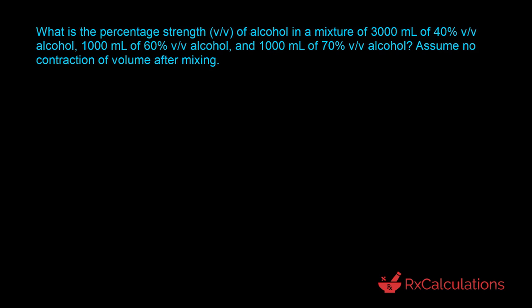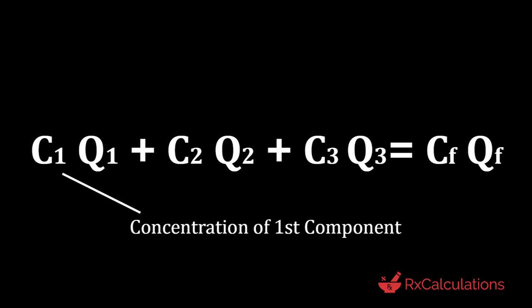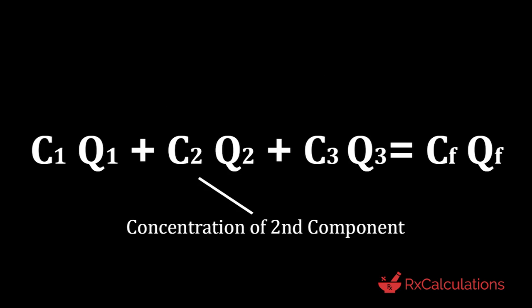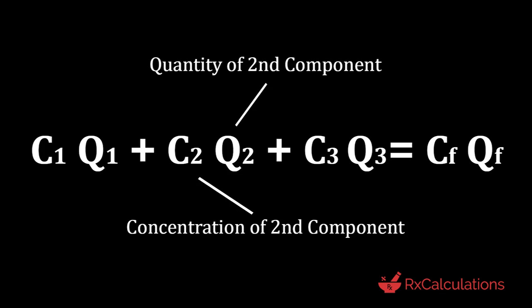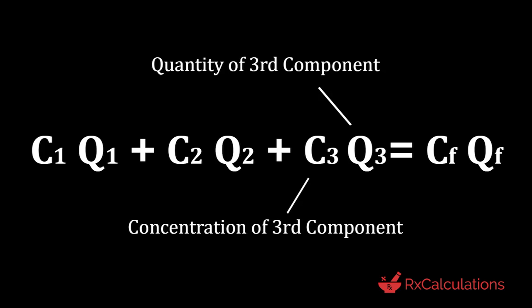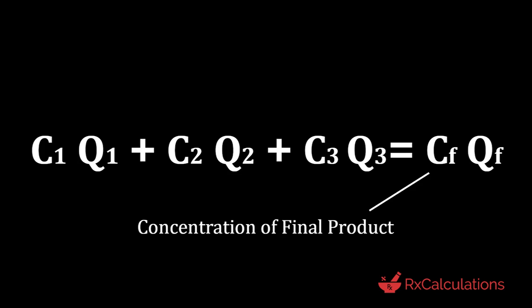The other important thing to notice is that in this question you have three components that you are mixing, so you're going to use the modified form of the general algebraic equation for three components. It looks like this: C1Q1 + C2Q2 + C3Q3 = Cf·Qf. Here, C1 is the concentration of the first component, Q1 is the quantity of the first component, C2 is the concentration of the second component, Q2 is the quantity of the second component, C3 is the concentration of the third component, and Q3 is the quantity of the third component. Cf is the concentration of your final product and Qf is the quantity of your final product.